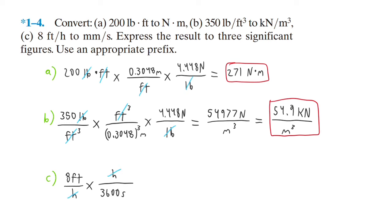For every foot there's 0.3048 meters, so feet cancel. The last thing is to convert meters to millimeters: for every meter there's 1000 millimeters.